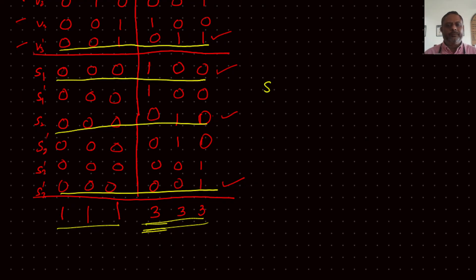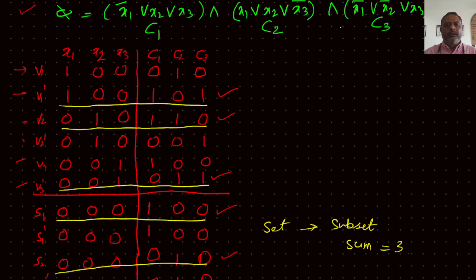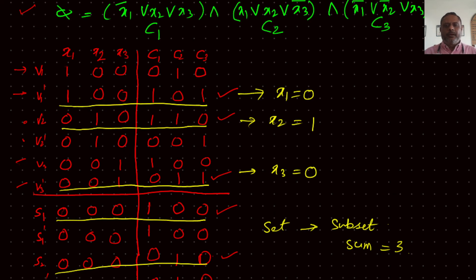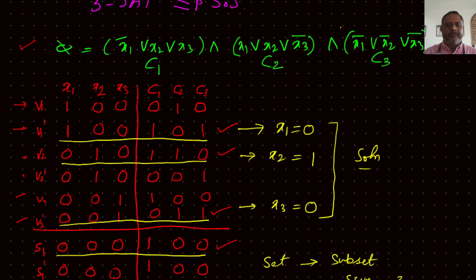So there was a set, and from that set we selected a particular subset whose sum equals the target. Why 3 for the clause columns? Because we wanted to make sure at least one literal from each clause is satisfied. This is exactly the Sum of Subsets problem — selecting a subset with a specific target sum.